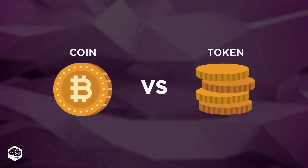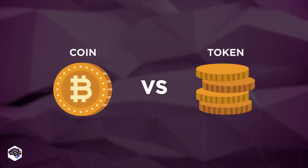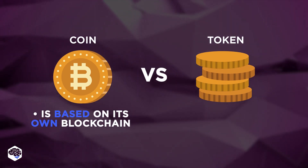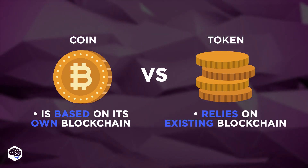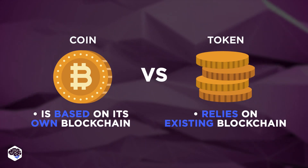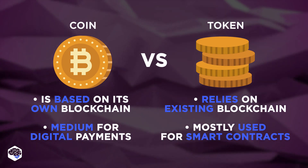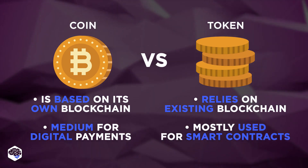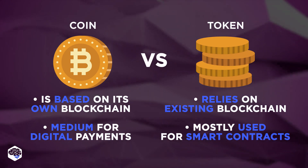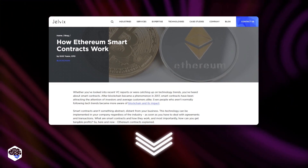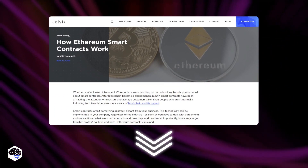What is the difference between a coin and a token? Coins are cryptocurrencies that are based on their own blockchains, while tokens do not have their own blockchain and rely on existing ones. Coins are primarily used as a medium for digital payments, while most tokens are used to execute smart contracts, raise funds for crowd sales, or as rewards. We have a great guide on creating Ethereum smart contracts, so check it out — the link is in the description box.